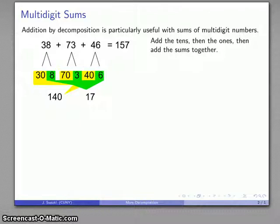Mentally what this works is something like this: 38, 73, 46. 30 plus 70 plus 40 is 140. 8 plus 3 plus 6 is 17. That gets me 140 plus 17, 157. And with very little effort, it becomes easy to add multi-digit sums here mentally without ever having to write anything down.